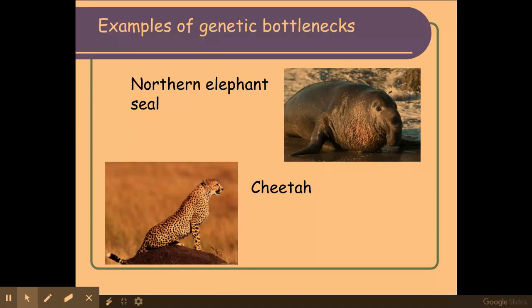Examples of genetic bottlenecks are the northern elephant seal and the cheetah. The northern elephant seal was hunted near to extinction with only about 20 individuals left, resulting in massively reduced genetic variation compared to the southern elephant seal. With cheetahs, the population size has been massively reduced due to poaching, so cheetahs have greatly reduced genetic variation — for example, the cheetahs that remain share about 99% of similar alleles with each other, whereas normally this figure is about 80%.